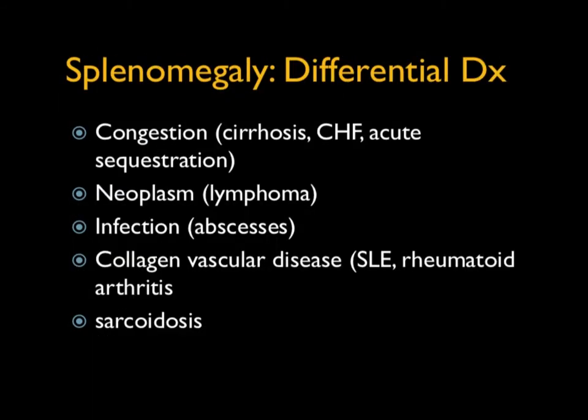In terms of splenomegaly, benign and malignant lesions can give you splenomegaly. It can also be due to congestion, like in cirrhosis, failure, or sequestration. Obviously neoplasm, abscesses, some of the collagen vascular diseases, as well as sarcoidosis.